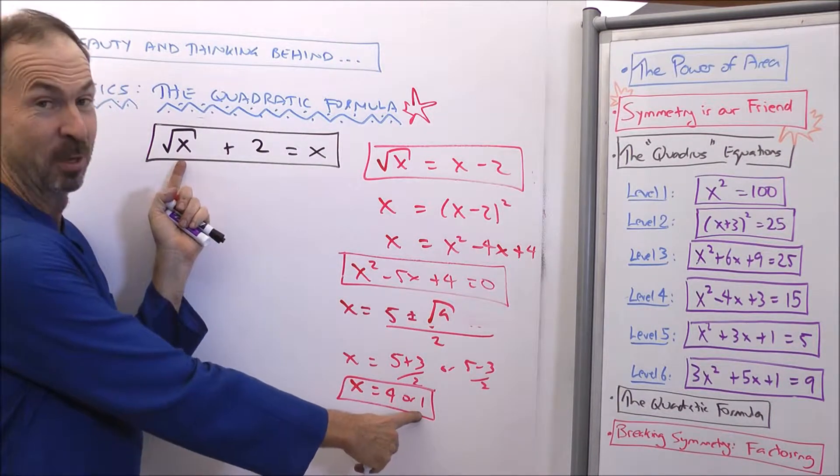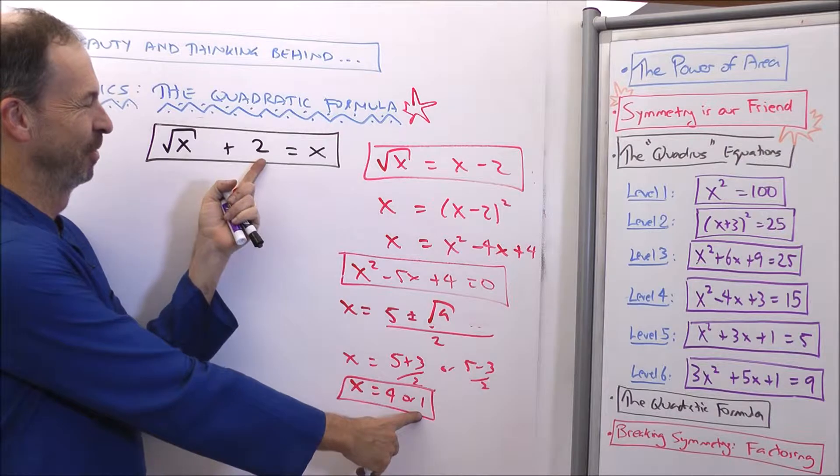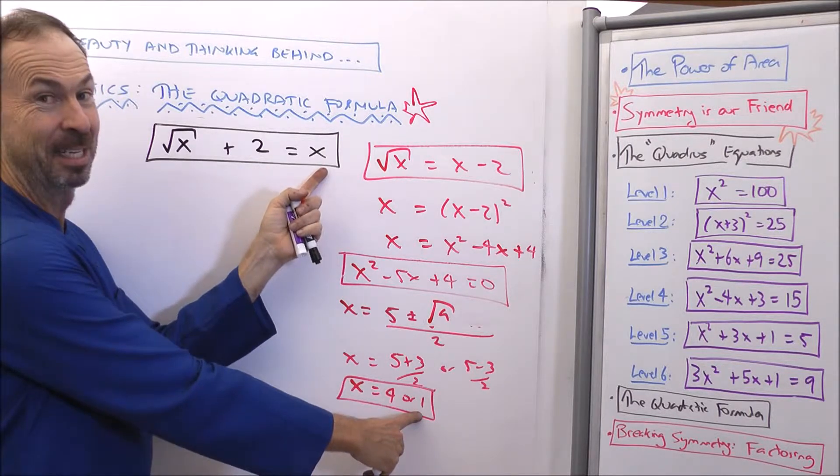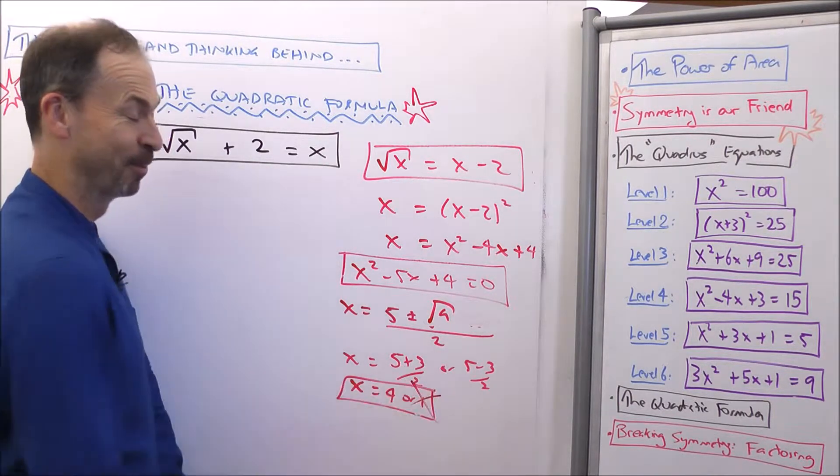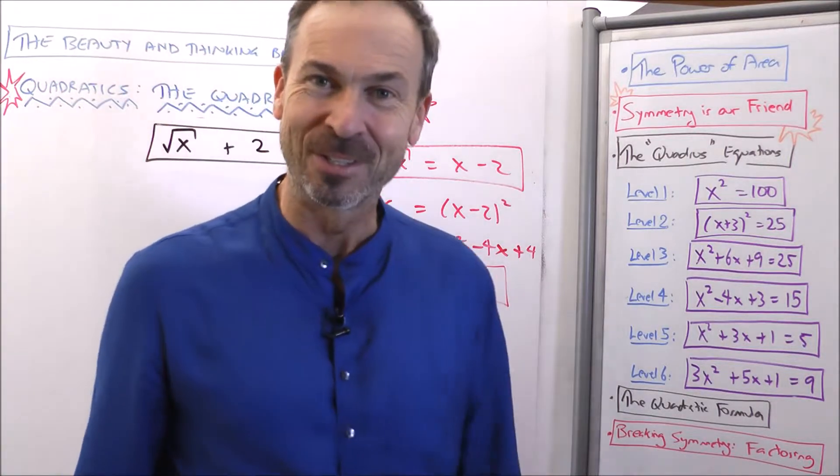1. x equals 1. Square root of 1 is 1. Plus 2. Left hand side is 3. But the right hand side is 1. It doesn't work. We've got a false solution.